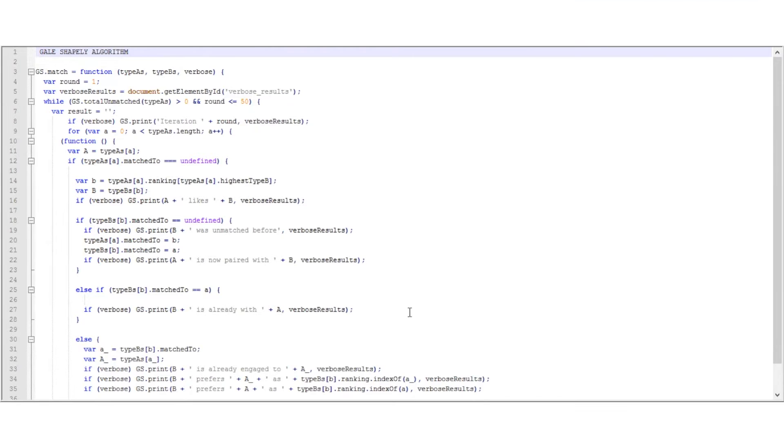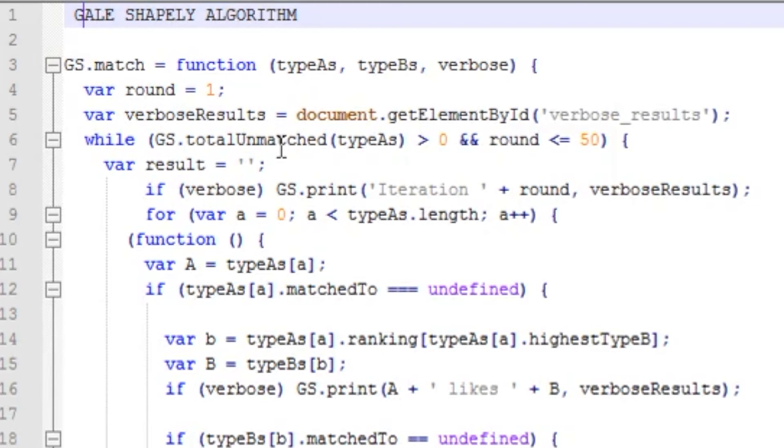Let me show you some code. This is the Gale-Shapley algorithm in JavaScript. It will be easier for me to explain the workings of it via the pseudocode, so I will just do that.